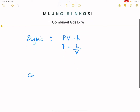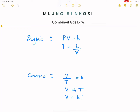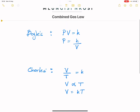And we looked at Charles's law. Under Charles's law we looked at the relationship between volume and the temperature of a gas. If you look at it, it will give us a constant — or we can simply say the volume of a gas is directly proportional to the temperature.